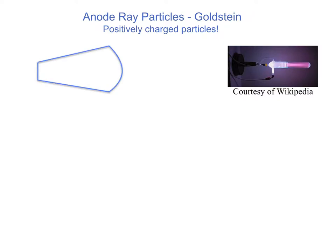As in the cathode ray tube, I have simply shown a reversal of the charge field. At the bottom of the bulb you have the anode — the anode is positively charged — and it emits anode ray particles. At some distance from it is a cathode, and a hole is drilled into the cathode so the anode ray particles can pass through and hit the screen. The screen is a phosphorescent screen coated with a phosphor material on the inside, so when the rays hit the screen they generate a glow, allowing you to track the position of the beam.